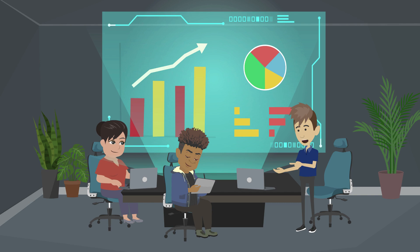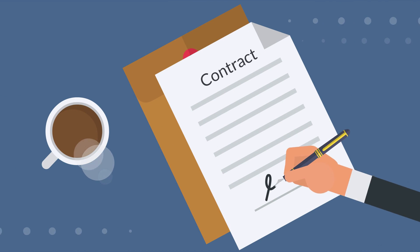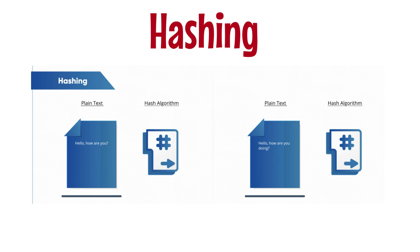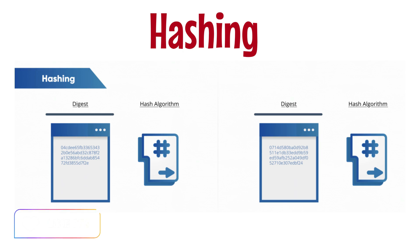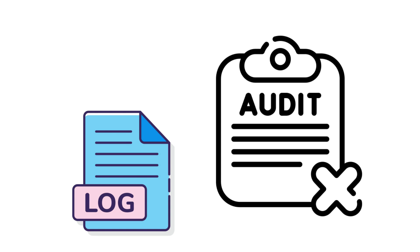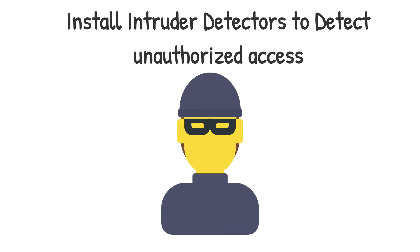Integrity means ensuring that information is accurate and cannot be tampered with by unauthorized parties. For example, a company might use digital signatures and hashing algorithms to ensure that data has not been tampered with during transmission. Additionally, companies might implement change controls, such as logging and auditing, to track any changes made to sensitive data.